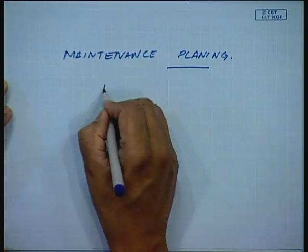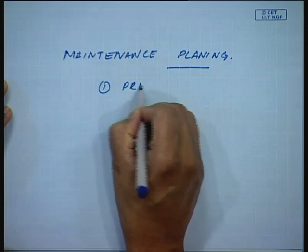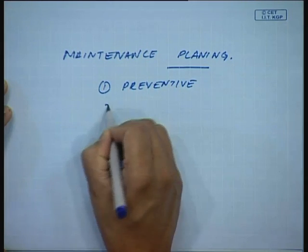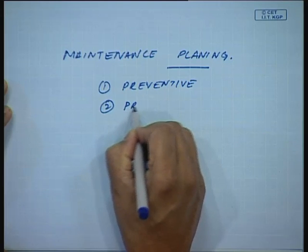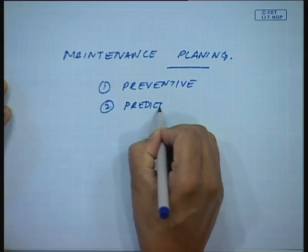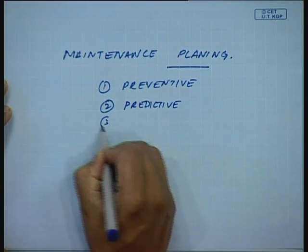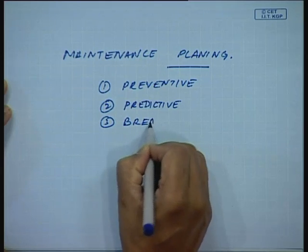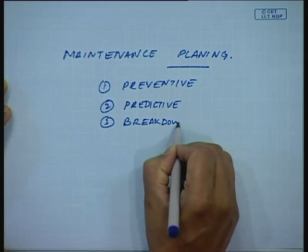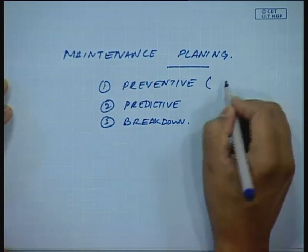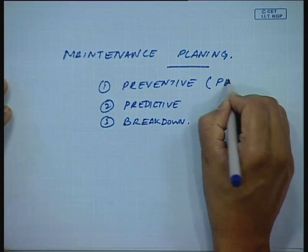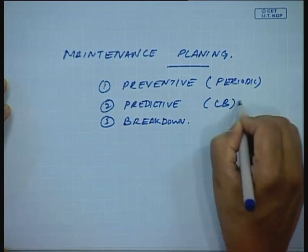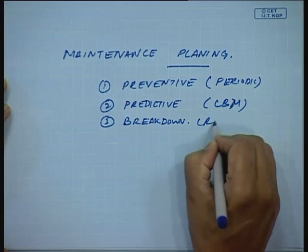As we know, there are three types of maintenance we have discussed: preventive — also called periodic — predictive, also known as CBM, and breakdown, also called reactive maintenance.